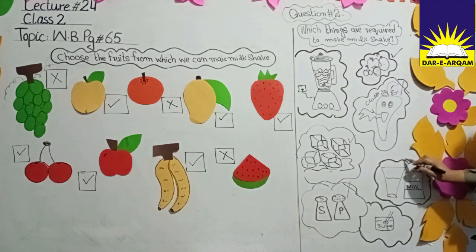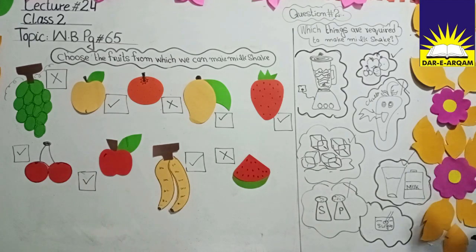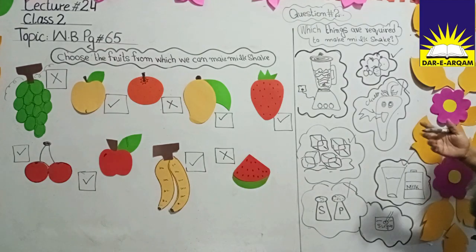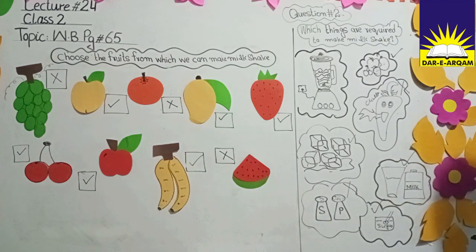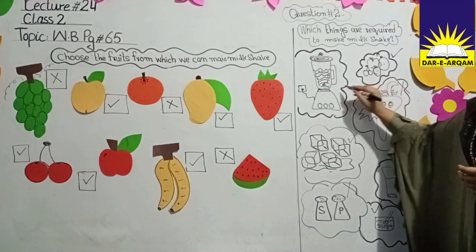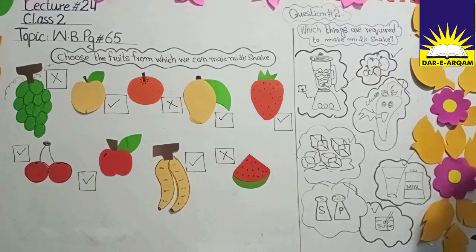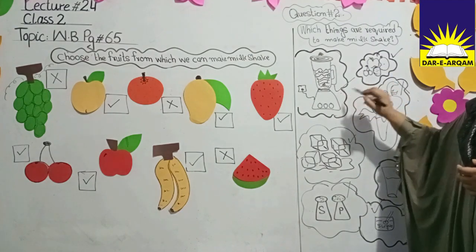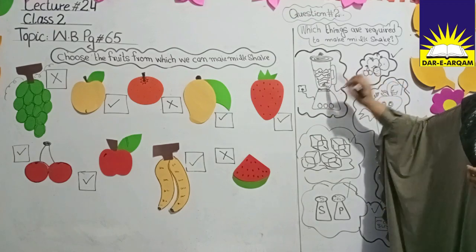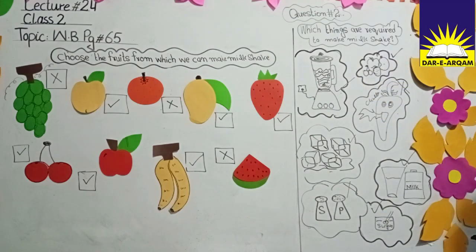Next is milk. As the name shows, it is a milkshake, so milk is the basic ingredient. Next is sugar — we have to add sugar because it is sweet. Next is a blender or mixer — this is very necessary. When we add all the ingredients into the blender, we will get the product.